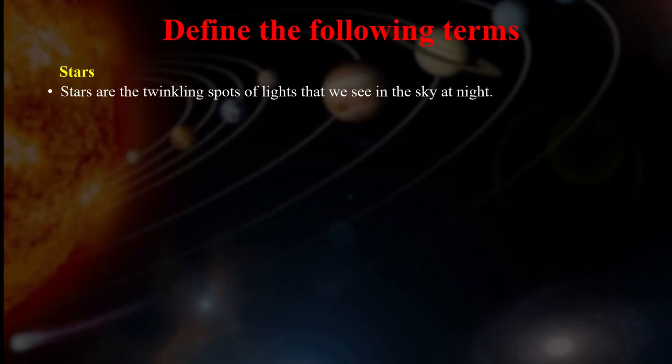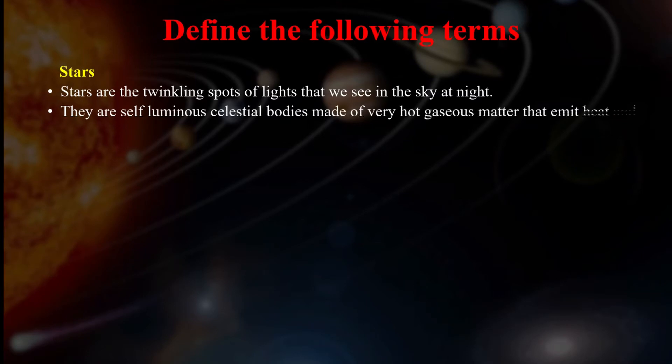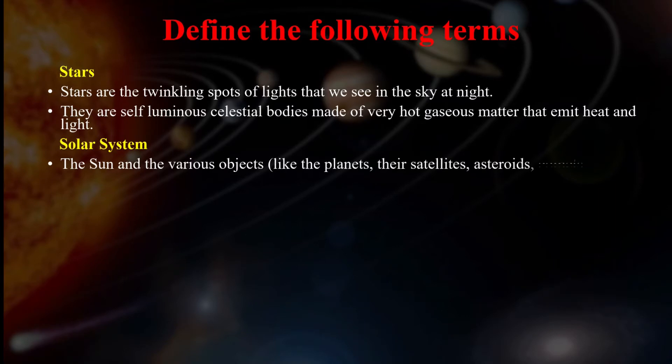Now let's define a few terms. Star. Stars which we see at night in the sky are the twinkling spots of lights. Stars are self-luminous celestial bodies made of very hot gaseous matter and these stars also emit heat and light. Solar system. The sun and the objects like the planets, their satellites, asteroids, comets, and meteors that move around the sun together form the solar system.